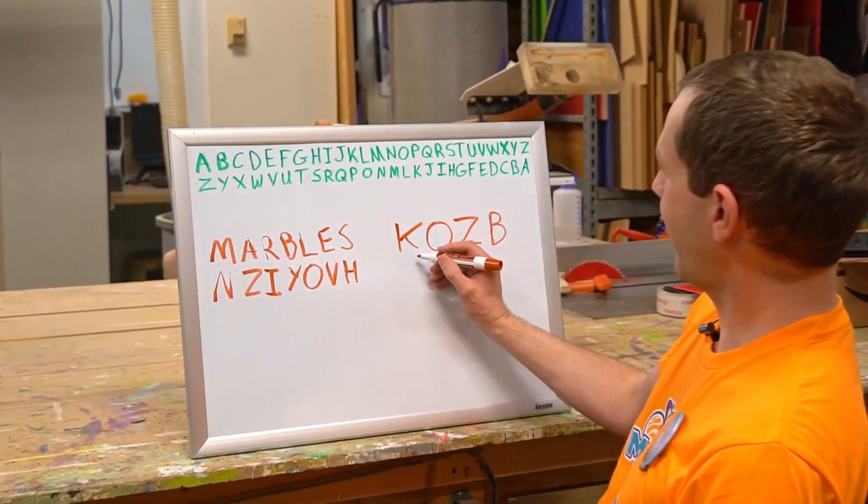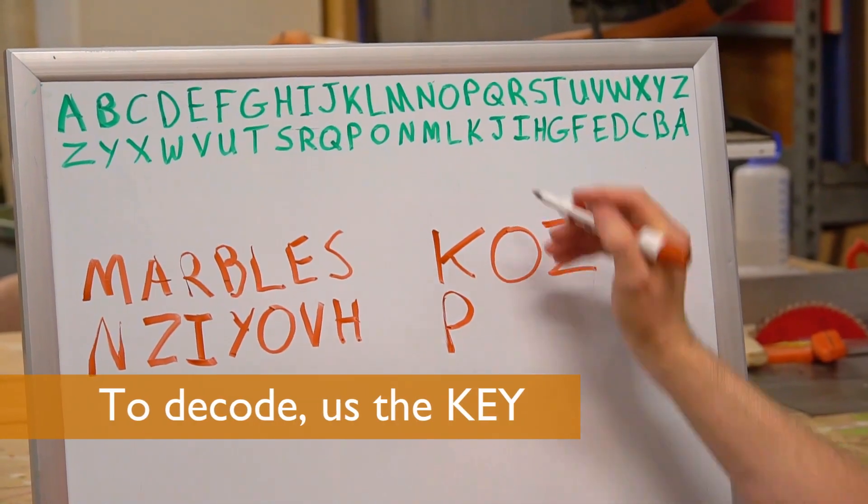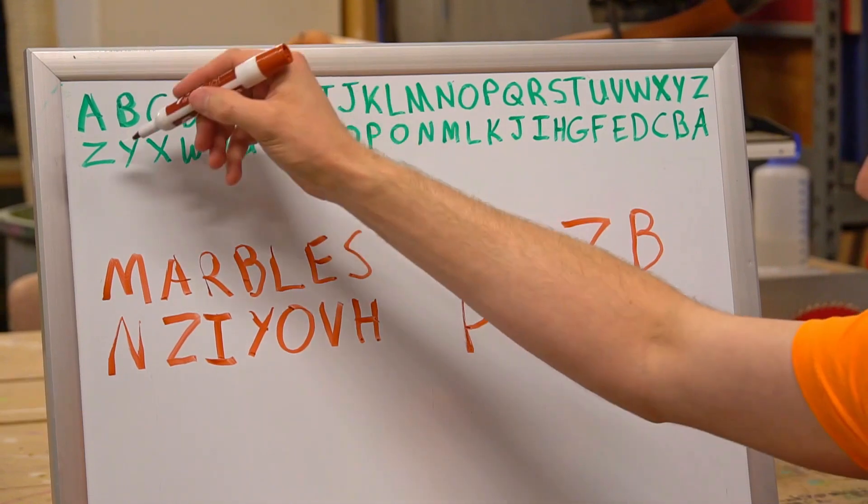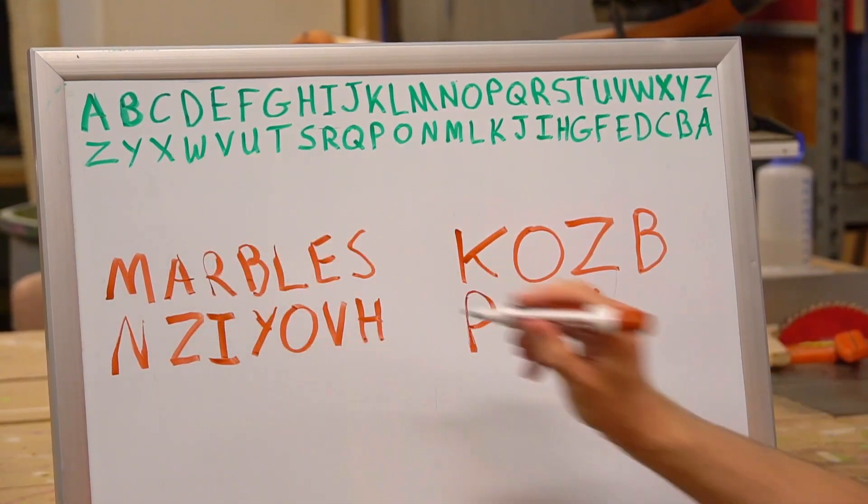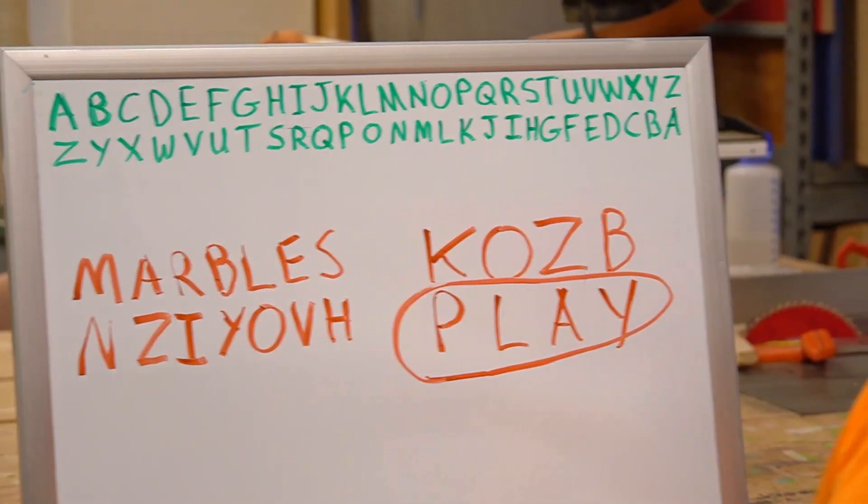Did you figure it out? Let's decode it together. K becomes P, O becomes an L, Z becomes an A, and B becomes Y. P, L, A, Y. Play.